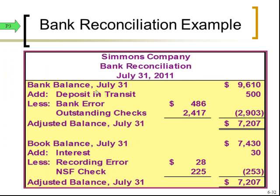Here's how the reconciliation looks. There are two common formats — bank side on top and book side on the bottom, or side by side. For the bank side, we take the beginning balance of $9,610, add the deposit in transit of $500, then subtract the erroneous $486 deposit and the outstanding checks of $2,417 — a total subtraction of $2,903 — giving us an adjusted bank balance of $7,207.